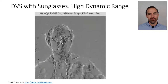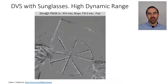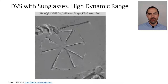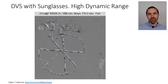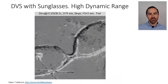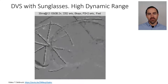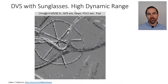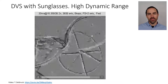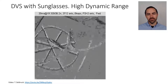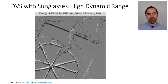Here we have Toby Delbruck wearing sunglasses and he's showing these lines. He takes out the glasses and shows that the DVS — in this case DVS-128 — is able to see the scene practically unchanged. There is a bit more background noise because event sensors have more noise in dark regions than in bright regions, but apart from that there is not much more difference.